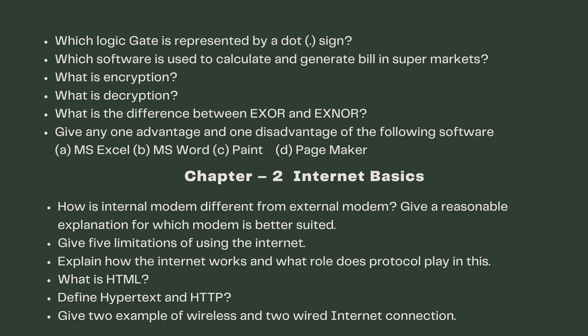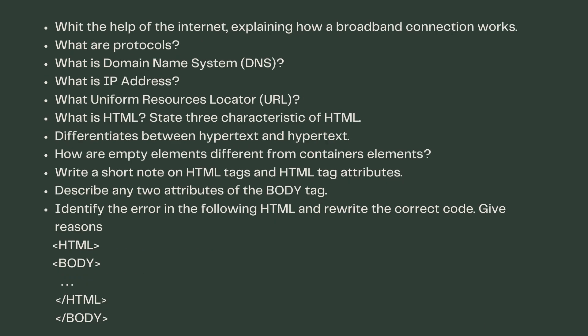Give two examples of wireless and two wired internet connections. With the help of the internet, explain how a broadband connection works. What are protocols? What is a domain name system (DNS)? What is an IP address?